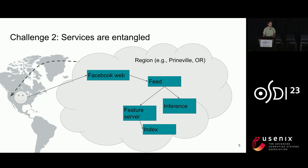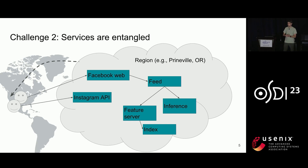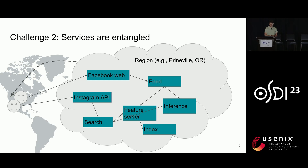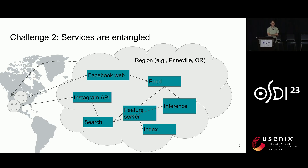Servers are entangled in another way as well. An Instagram user performing a search triggers the Instagram API, which calls a search server that retrieves features for ranked items and calls into our inference serving system to produce ranked search results. So we're dealing not with one dependency graph, but multiple dependency graphs each driven by different top-level products — in this case Facebook and Instagram, but we have tens more.